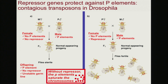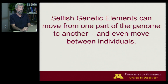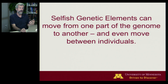With a repressor gene, the transposons are stopped in their tracks, gene function remains normal, and there is no further damage — unlike what we saw with pigment genes being turned off in corn. So, these selfish genetic elements can move from one part of the genome to another within the same individual, as in Indian corn, and they can even move from one individual to the next, like plasmids in bacteria and P elements in Drosophila.